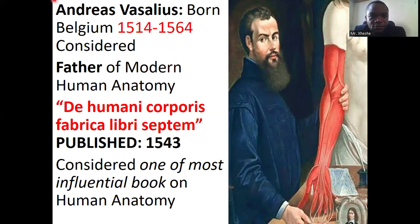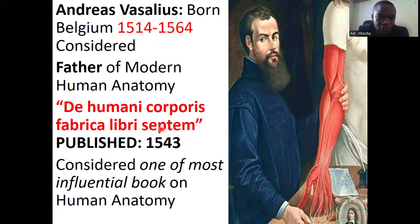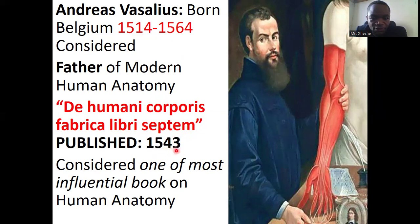When it comes to anatomy, Andreas Vesalius is considered the father of modern anatomy. He was born in Belgium and did a lot of work in anatomy, publishing a book called 'The Fabric of the Human Body' — in Latin, 'De Humani Corporis Fabrica Libri Septem.' The first version was published in 1543, and he went on to publish more — it has about seven volumes.